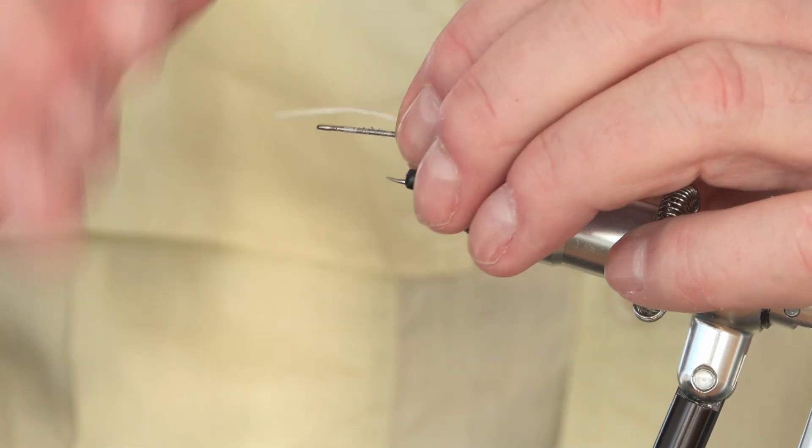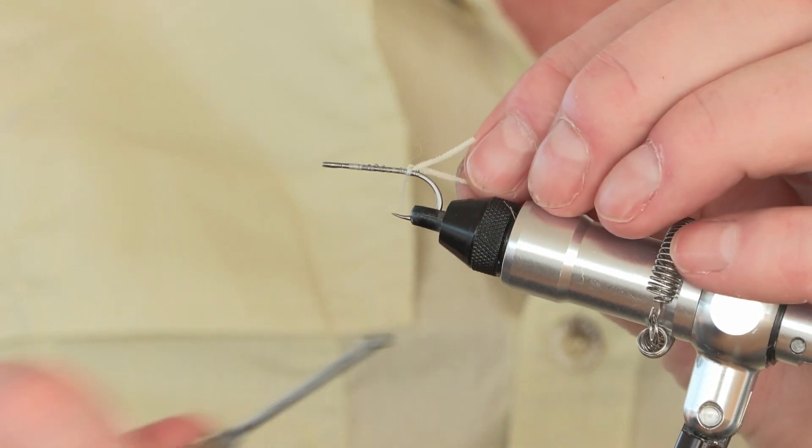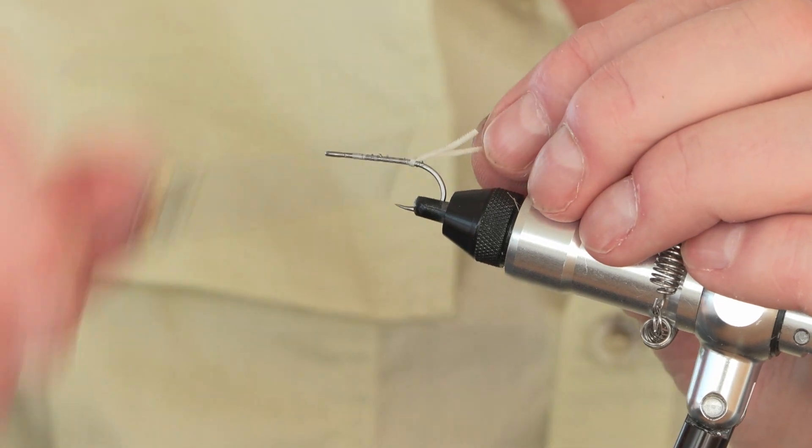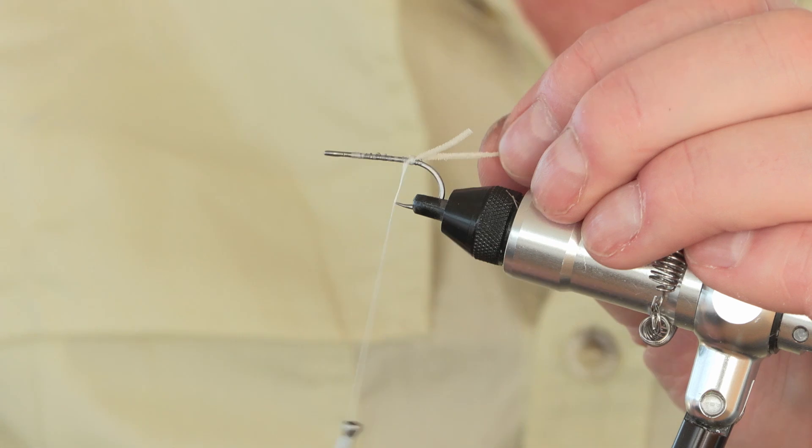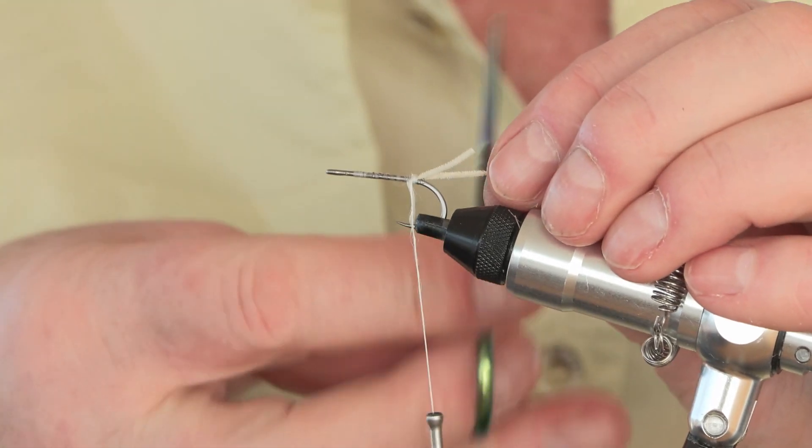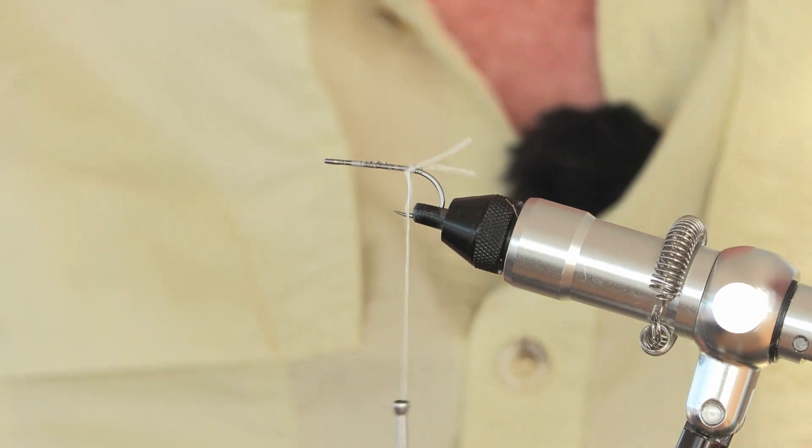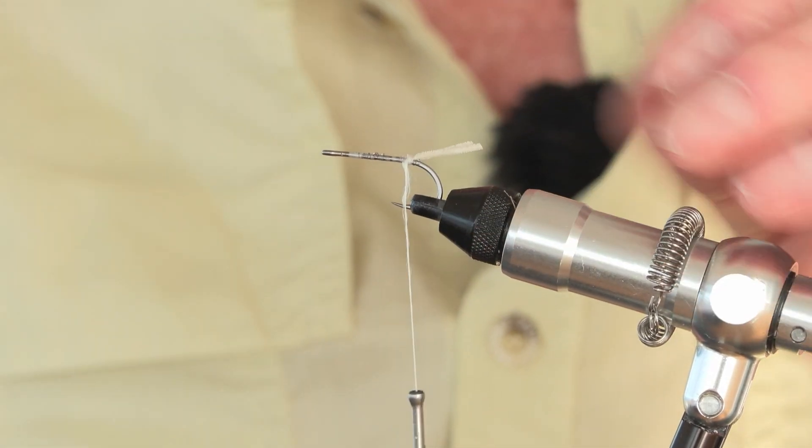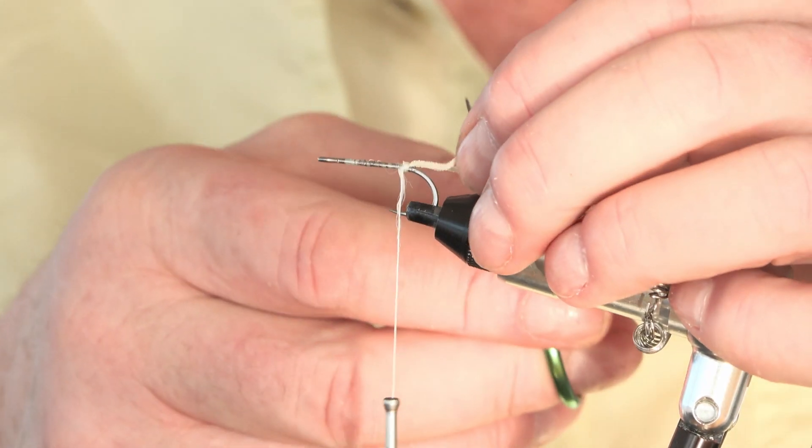First of all I'm tying in what I call, it's not a tail, it's actually the eyes of the shrimp. The gotcha is a good imitation of a fleeing shrimp. So we tie in the micro chenille and we'll adjust this later because all it is is two eyes but I'll adjust the length of it later once the fly is finished.